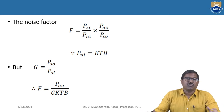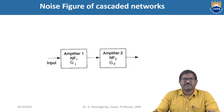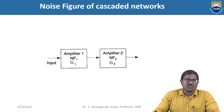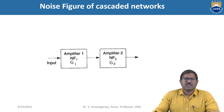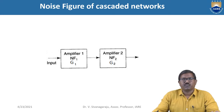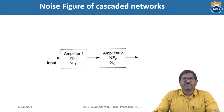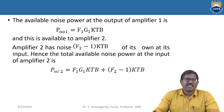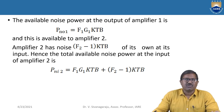When amplifiers are arranged in cascade form, what happens? This is the noise figure of cascaded networks. We take two amplifiers connected to each other. The input comes into amplifier 1 and the output is taken from amplifier 2. Here we are taking two, but it may be more than two. The available noise power at the output of amplifier 1 is PNO1 = F1 · G1 · KTB.